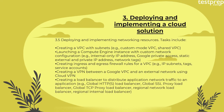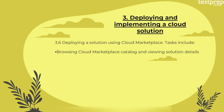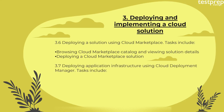Additional networking tasks include creating a VPN between a Google VPC and an external network using Cloud VPN; and creating a load balancer to distribute application traffic, for example global HTTPS load balancer, global SSL proxy load balancer, global TCP proxy load balancer, regional network load balancer, and regional internal load balancer. Number six: deploying a solution using Cloud Marketplace — tasks include browsing the catalog, viewing solution details, and deploying a Cloud Marketplace solution.